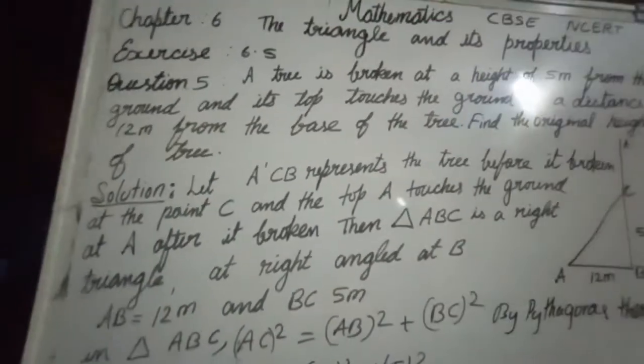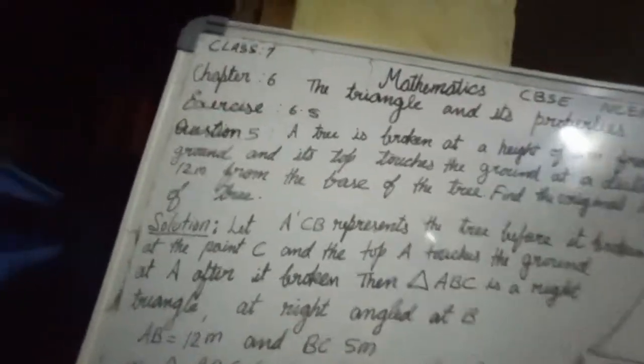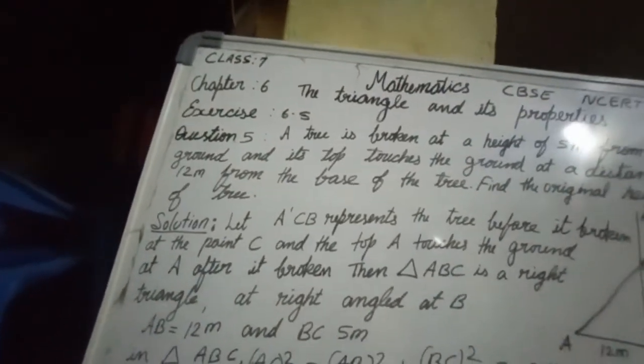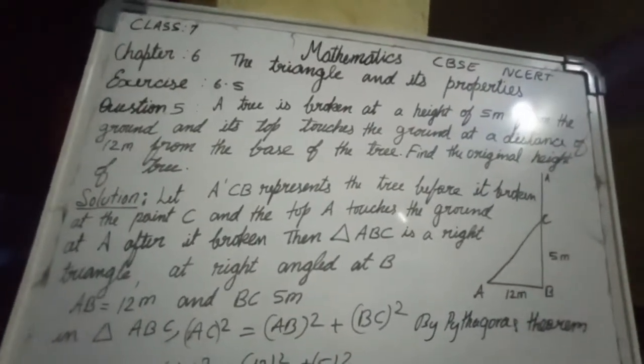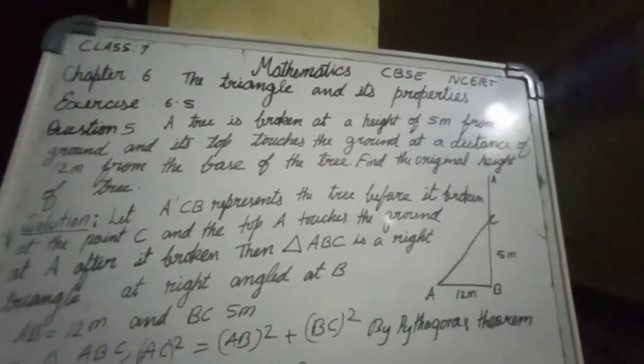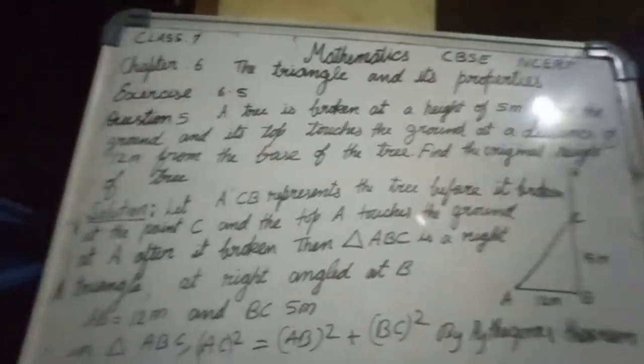AB is 12 meter, BC is 5 meter. So triangle ABC, AC square is equal to AB square plus BC square by Pythagoras theorem.